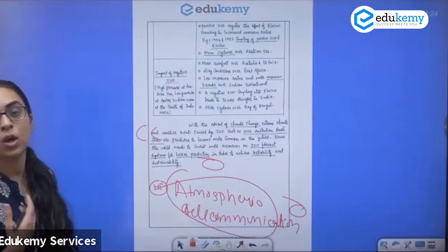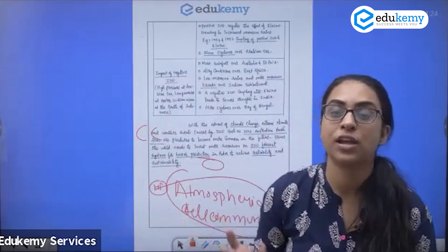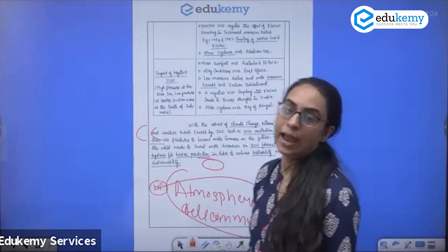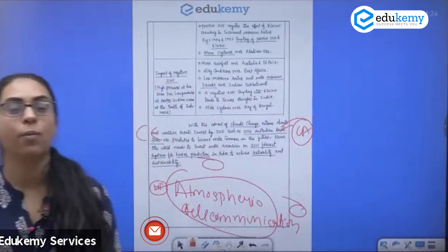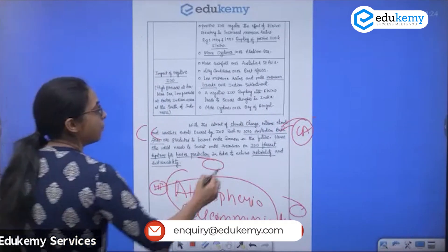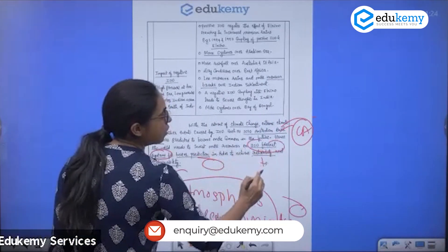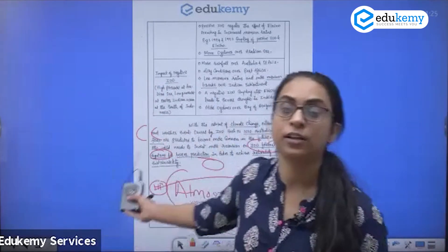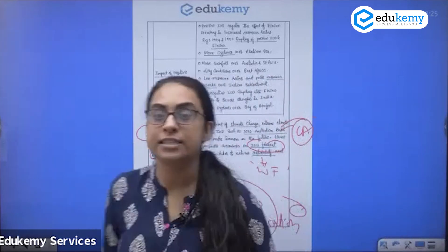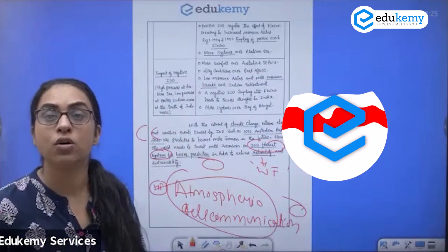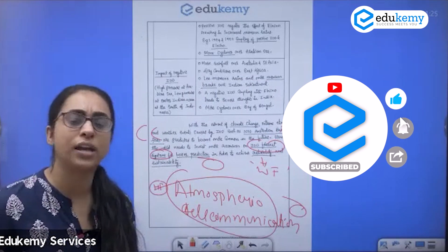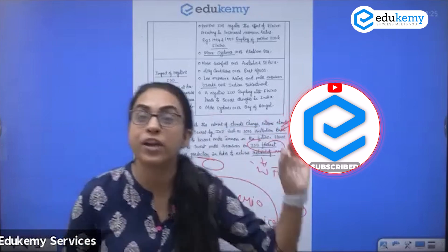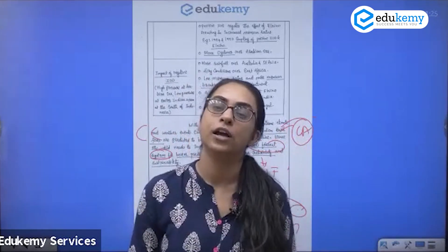You can incorporate current affairs such as bush fires in Australia linked to IOD. A way forward could include better forecasting systems. You can also mention significance for agriculture and water resources. There is no fixed way to write the introduction or conclusion — be flexible.